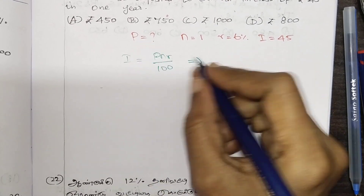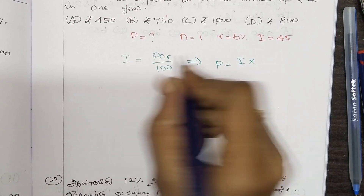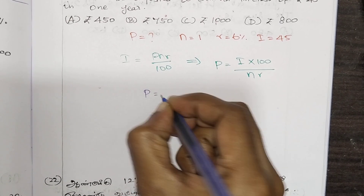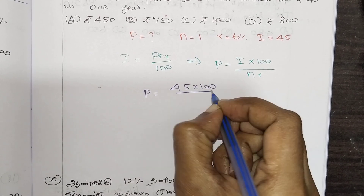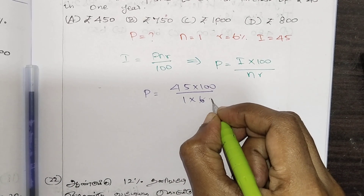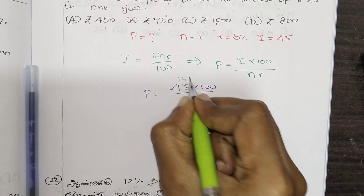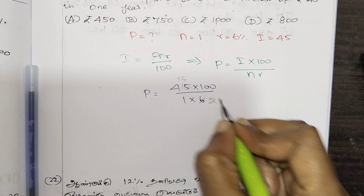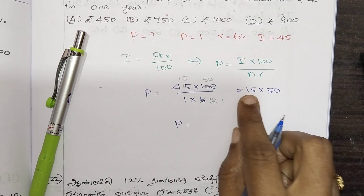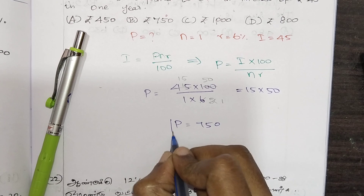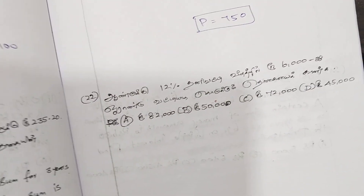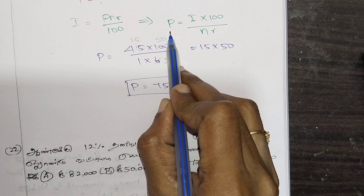Now, P equals 45 into 100, divided by n which is 1, into r which is 6. We can simplify: 3 tables — 3 into 5 is 15, 3 into 2 is 6. Then 15 into 50 gives us 750. So the principal amount P = 750 rupees.